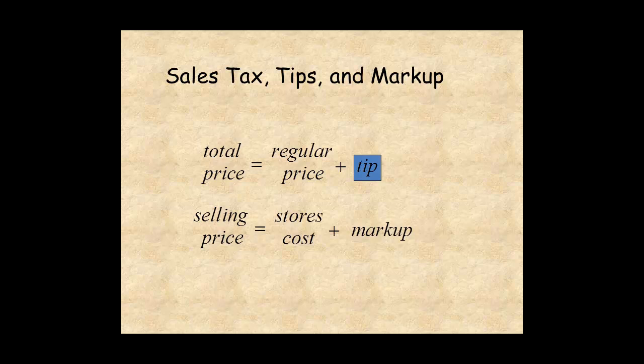A store sells items for more than it pays for those items. The amount of increase is the markup. The selling price is the amount the store pays for the item plus the markup. Tips and markup are calculated in exactly the same way as sales tax.